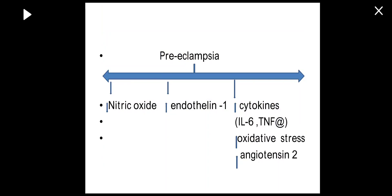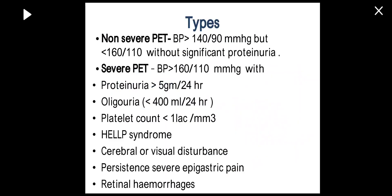Other contributors to the etiopathogenesis of preeclampsia include endothelin-1, nitric oxide (a vasodilator), cytokines, and oxidative stress factors such as interleukin-6 and TNF-alpha.